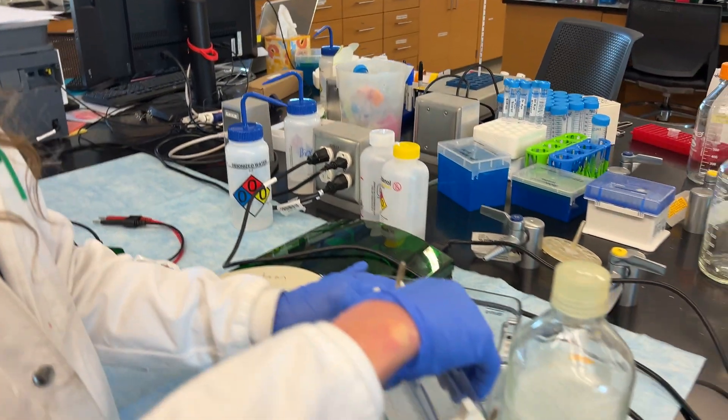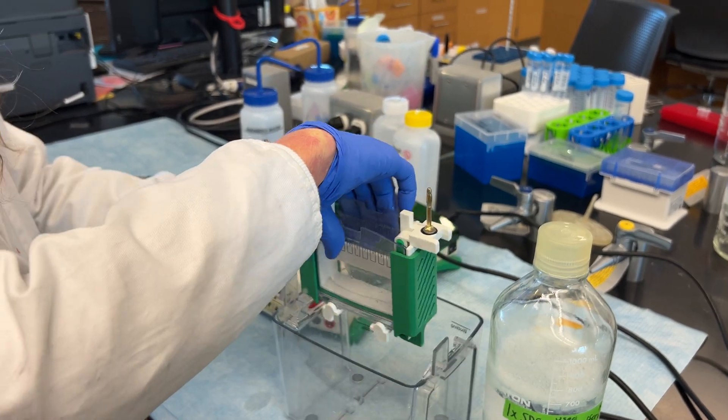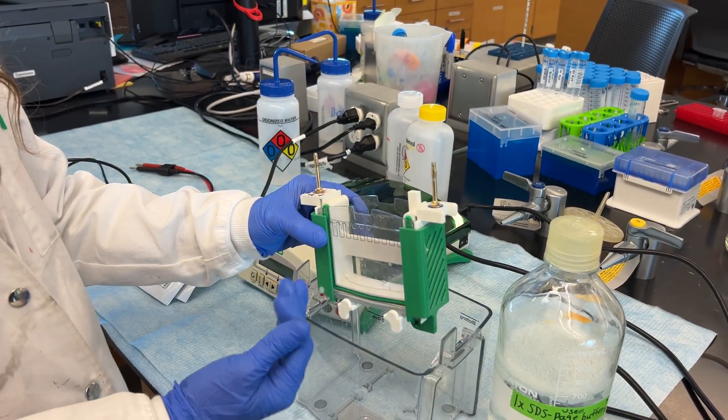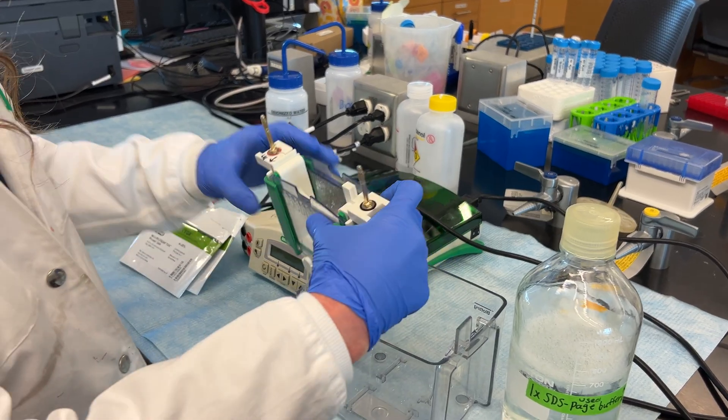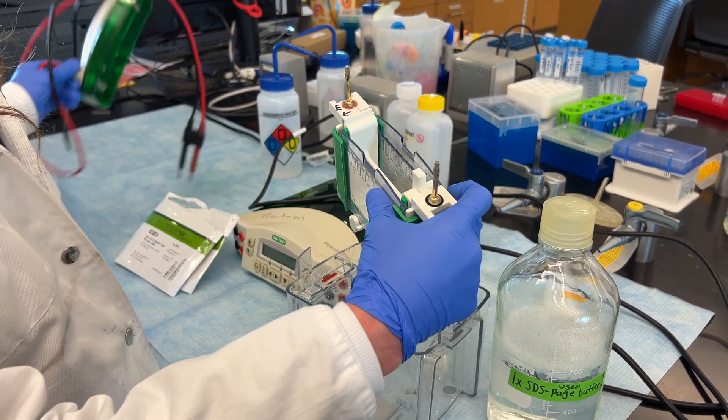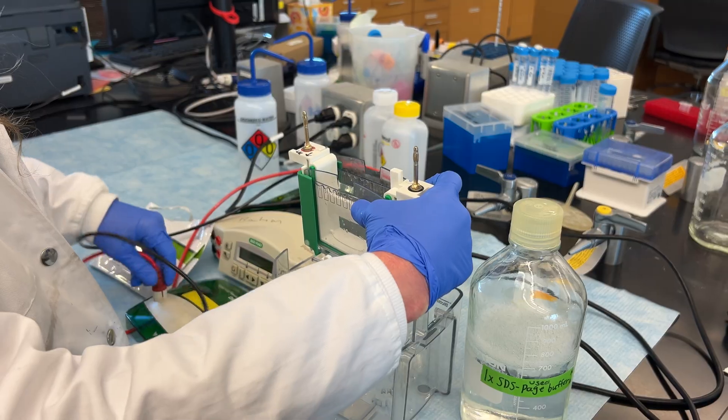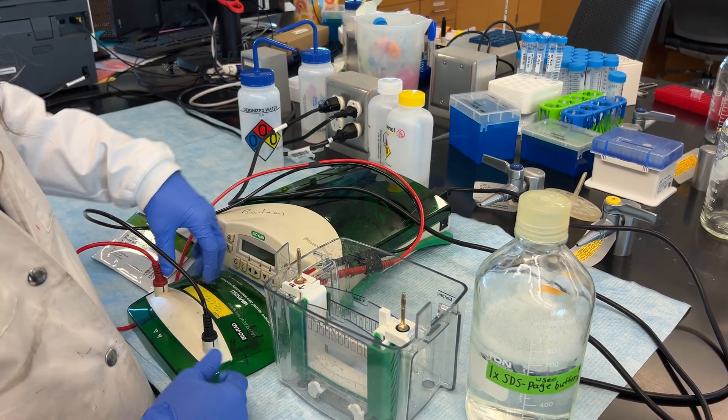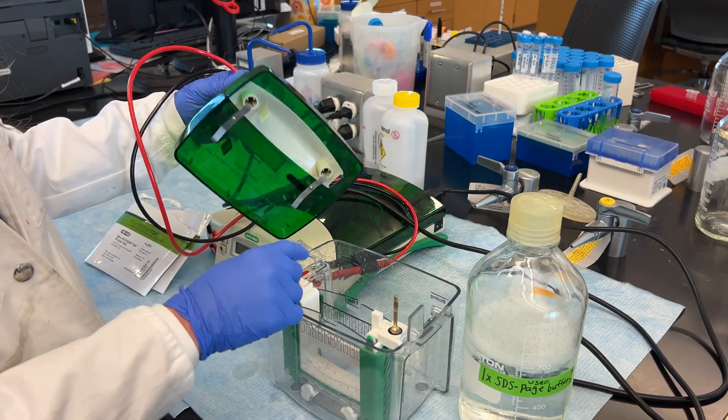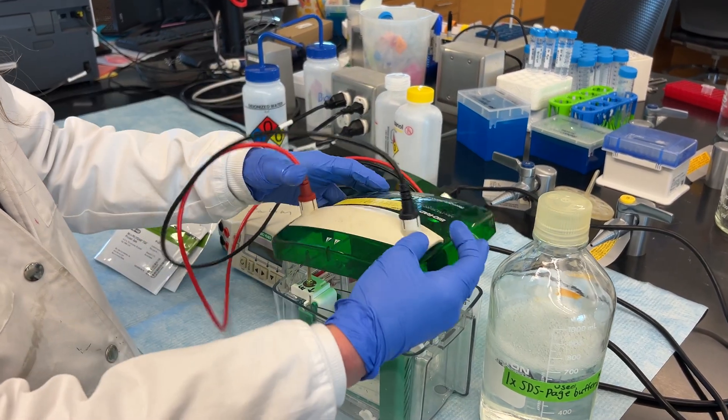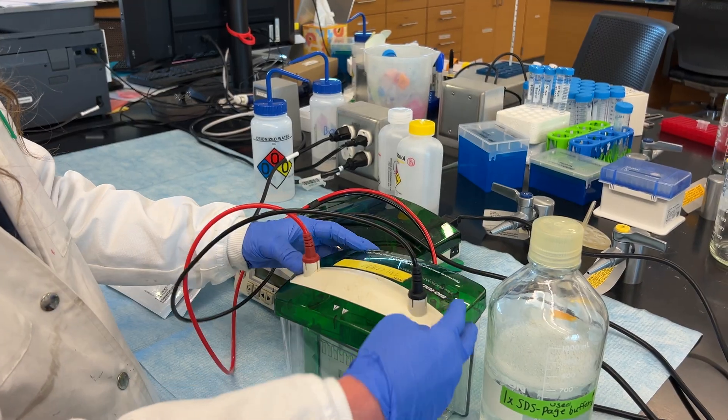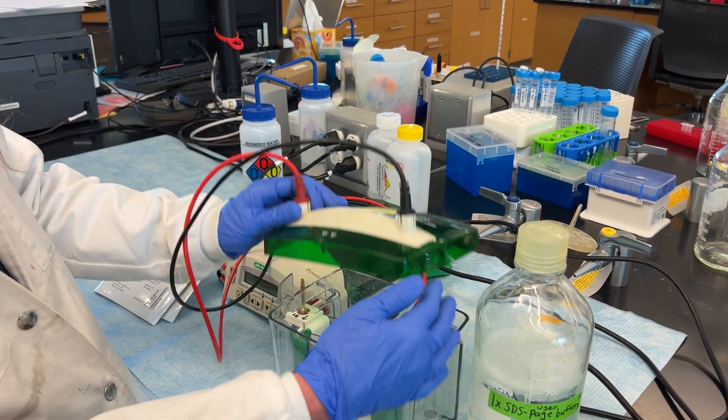When you stick it in your box, you want to make sure that you're sticking it in the way that's going to be most convenient for you to load. And so you should strategize beforehand so that when the box is in, you want to make sure the red is to the red and the black is to the black. And then these electrodes are going to need to be in contact with these. So you want to make sure that you're going to have your gel in the right orientation.